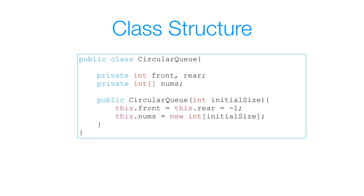So here we have three instance variables: front, rear, and a nums reference variable. Our front is going to keep track of the front of our queue, and the rear is going to keep track of the rear of our queue. Our nums is going to be an integer array that's going to represent our queue. In our constructor, we're going to take in an initial size, which is going to represent the initial size of our queue before we resize. We're also going to initialize our front and rear to negative 1, since our queue is empty.